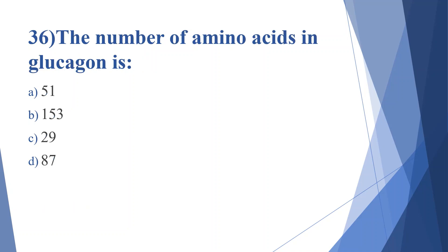Thirty-sixth question: the number of amino acids in glucagon is. Option A: 51. Option B: 153. Option C: 29. Option D: 87. Answer is option C, 29.